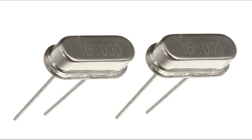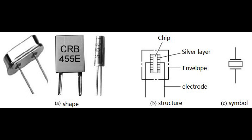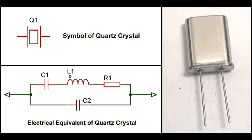A feedback loop is a fundamental concept in control theory and electronic circuit design, where a portion of the output of a system is fed back to the input to regulate or modify the system's behavior. Feedback loops play a crucial role in maintaining stability, achieving desired performance, and controlling complex systems. Positive feedback feeds the output back to reinforce or amplify the input signal and can lead to instability or oscillations if not properly controlled. Negative feedback opposes or reduces the input signal and is commonly used to stabilize systems and regulate their behavior.